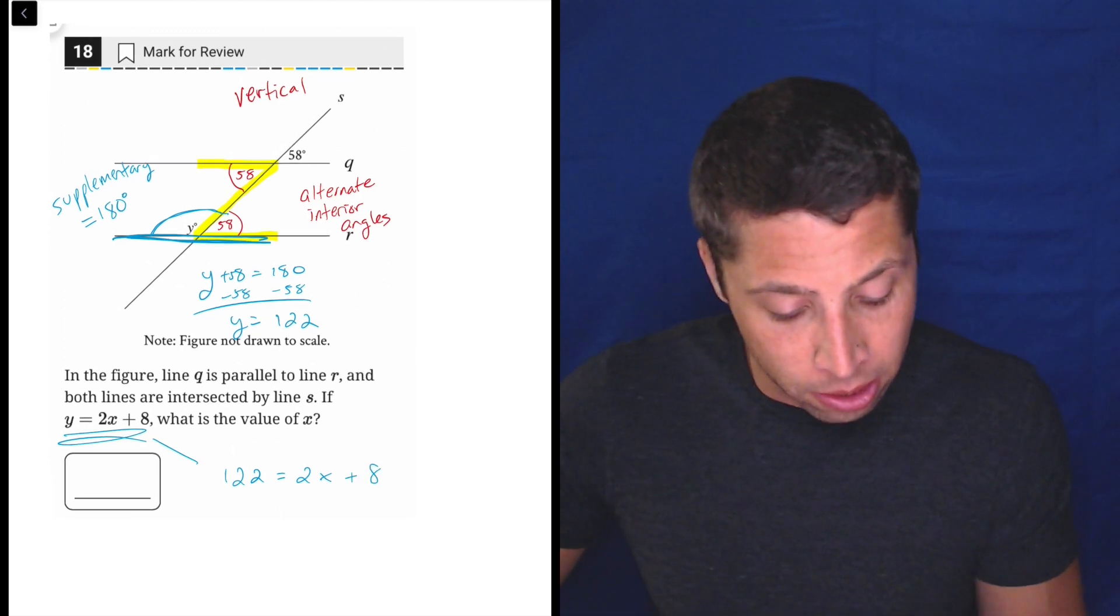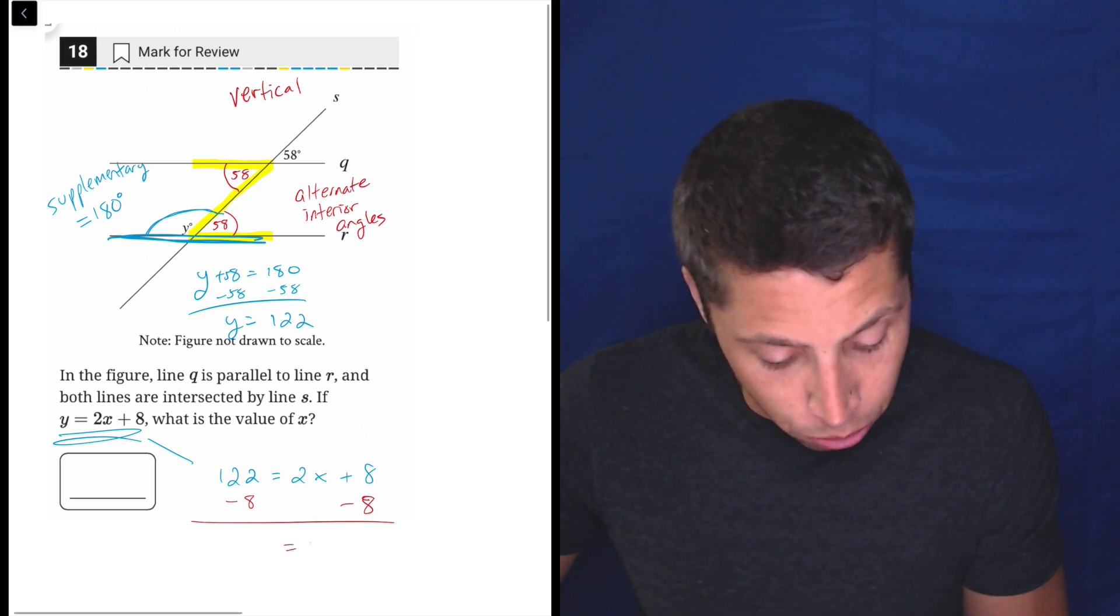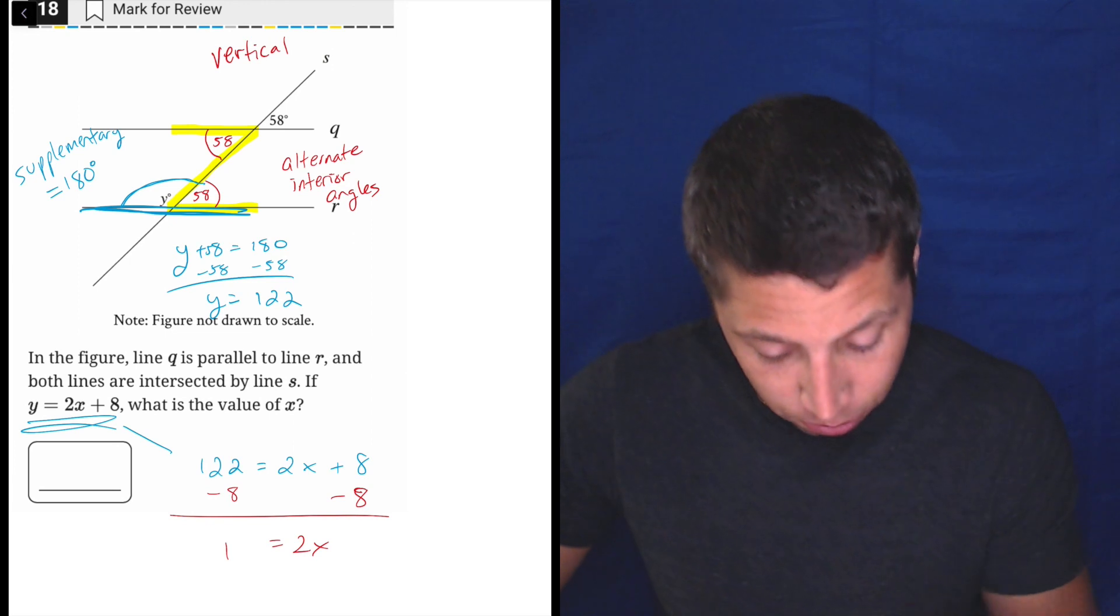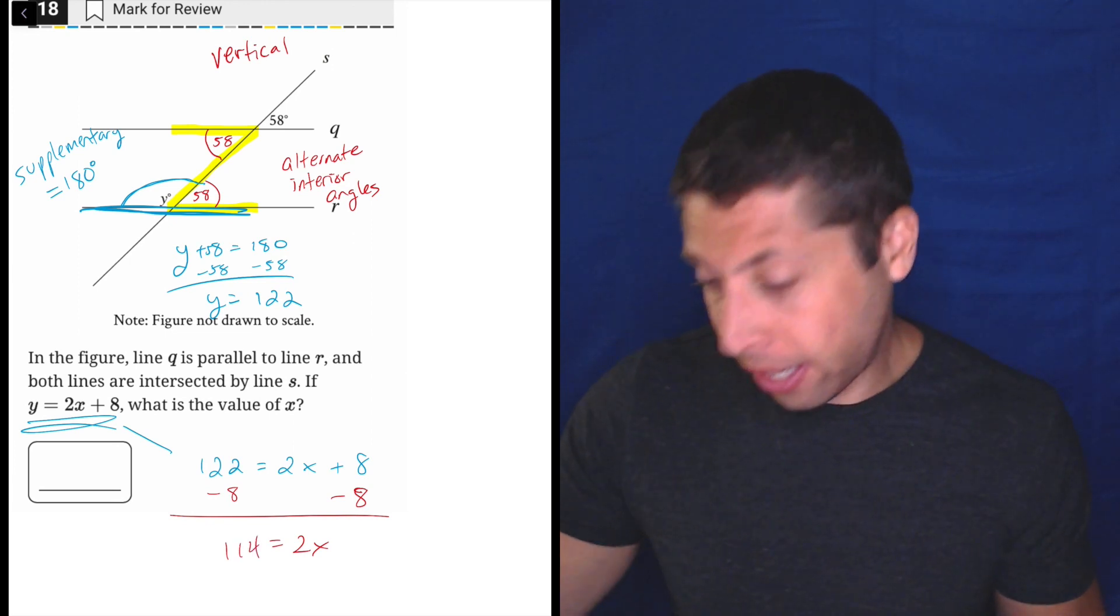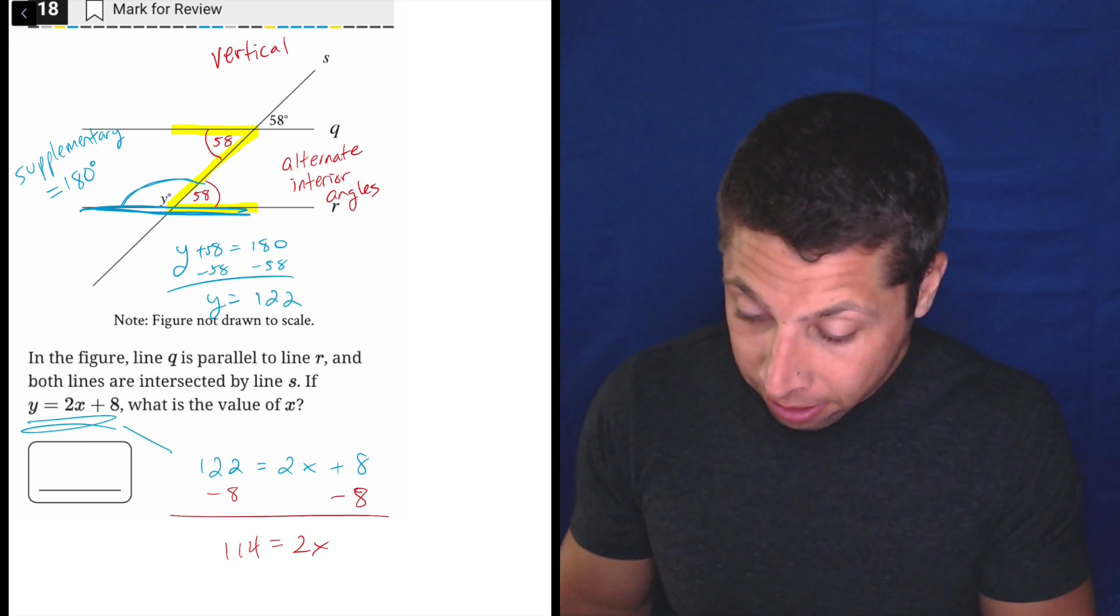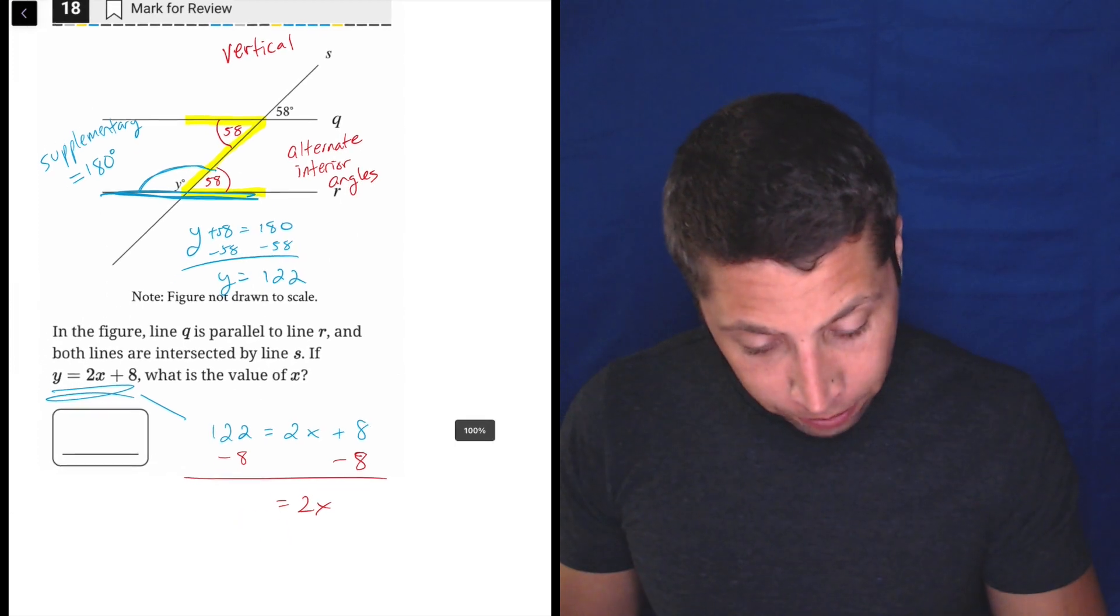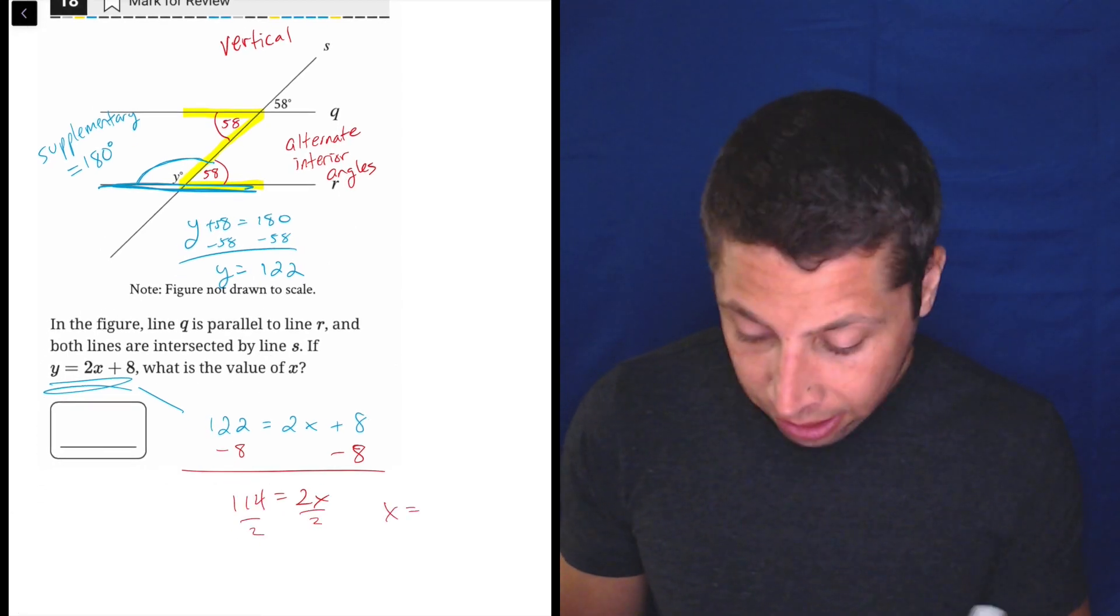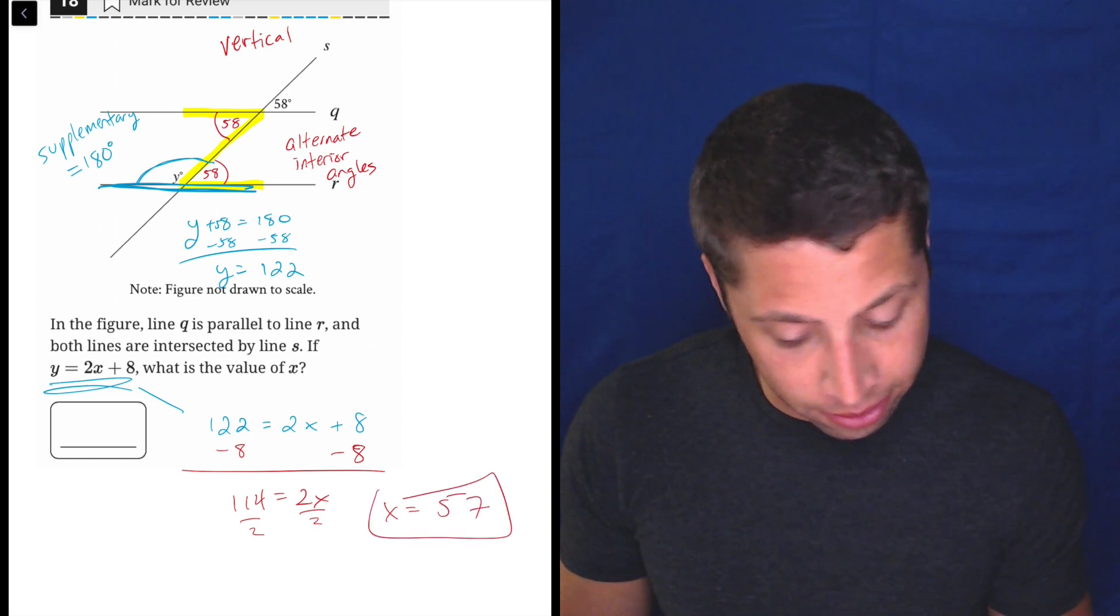And now let's solve, subtract 8 from both sides. So 2x is equal to 122 minus 8 is 114. And then we can divide by 2 and we're going to get x is equal to 57. And that is the answer.